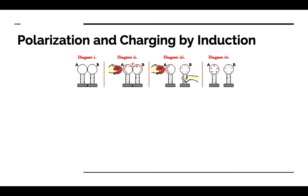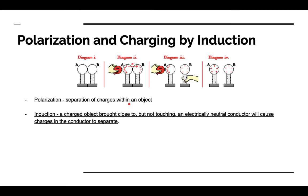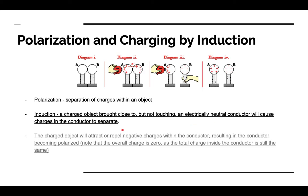The next main method of charge transfer is polarization and charging by induction — two separate but related things. Polarization is a separation of charges within an object. Charging by induction is when a charged object is brought close to, but not touching, an electrically neutral conductor, causing the charges in the conductor to separate.